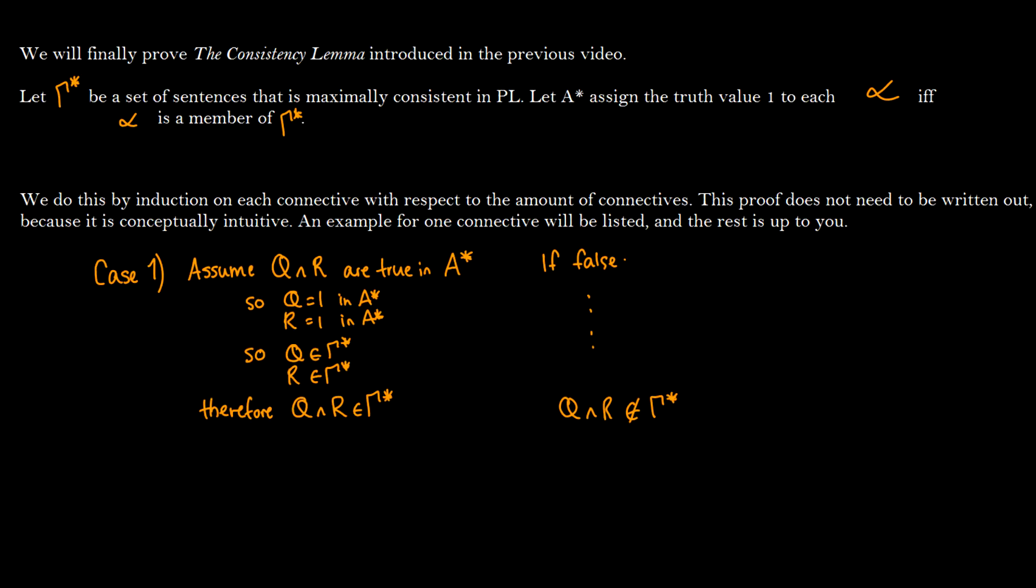We're going to let gamma star be our maximally consistent set. And we're going to let this variable a star assign truth values of one to each sentence if that sentence is a member of gamma star. Now we do this with induction, but I'm going to skip the induction and we're going to go over the basics of what we're doing here.